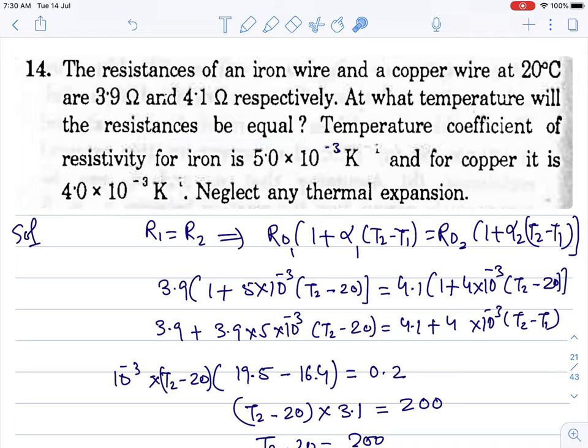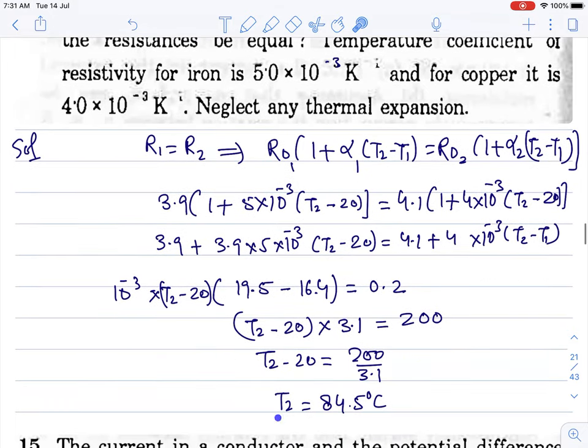Resistance is equal, R1 equals R2. And R equals R naught times (1 plus alpha delta t). Write the same for the second wire, for copper. Put all the values that are given. After simplifying, your final temperature will be 84.5. It is the temperature dependence of resistance formula: Rt equals R naught (1 plus alpha delta t).